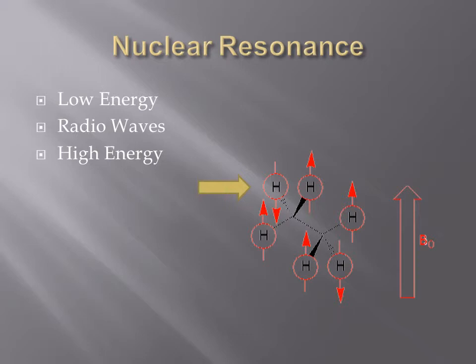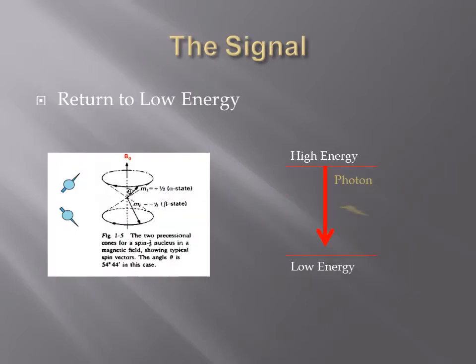As you recall, resonance is a system's ability to absorb energy if the right frequency is applied. A nucleus with spin can have resonance with radio waves. The radio waves are absorbed, and the energy of the nucleus increases, allowing the nuclear spin to rebel against the magnetic field and go against it in a state of higher energy. The arrow on the screen points to a nucleus with a spin direction opposite that of the magnetic field, meaning the nucleus is in a state of higher energy. When the radio wave stops, the nucleus returns to its lower energy state. When the nucleus returns to follow the magnetic field, it releases the built-up energy as a photon. The photon is a marker of the nucleus and can be read and translated into an image.